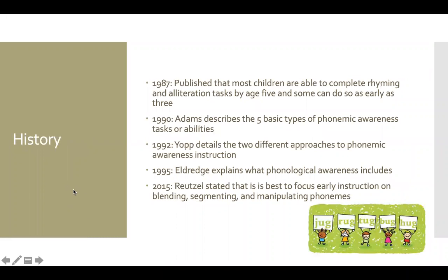In 1987, McLean, Bryant, and Bradley published that most children are able to complete rhyming and alliteration tasks by age five, and some can do it as early as age three, as found in the Phonics A-to-Z book by Blevins. Also according to Blevins, in 1990 Adams describes five basic types of phonemic awareness tasks: task one is rhyme and alliteration, task two is oddity tasks or phoneme categorization, task three is oral blending, task four is oral segmentation including counting sounds, and task five is phoneme manipulation, which includes substitution, deletion, or blend deletion.